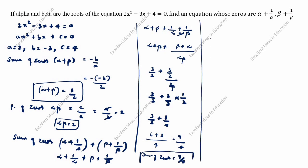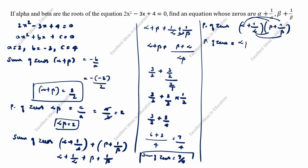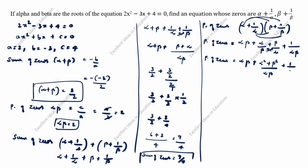Next, we will find the product of the new zeros: (alpha + 1/alpha) × (beta + 1/beta). Expanding by multiplying all terms, this gives: alpha×beta + alpha/beta + beta/alpha + 1/(alpha×beta), which simplifies to alpha×beta + (alpha² + beta²)/(alpha×beta) + 1/(alpha×beta).